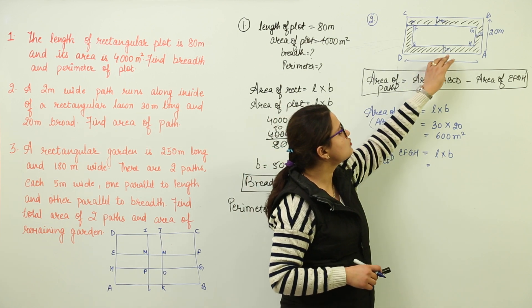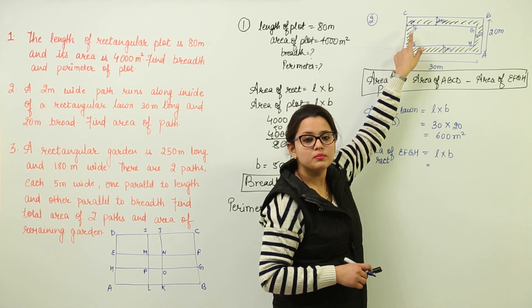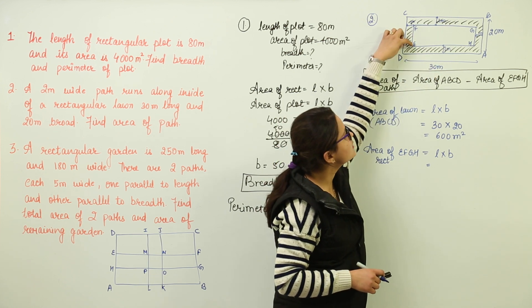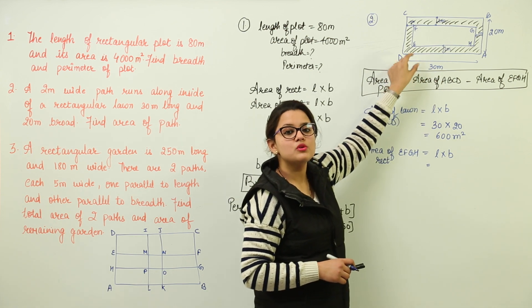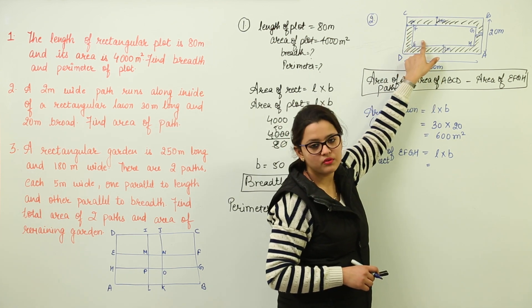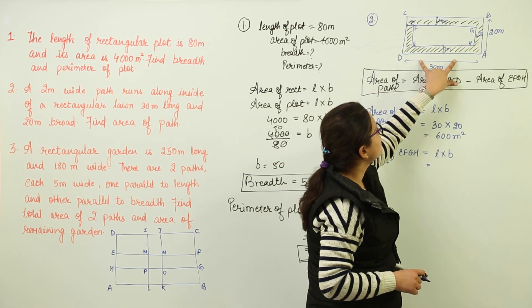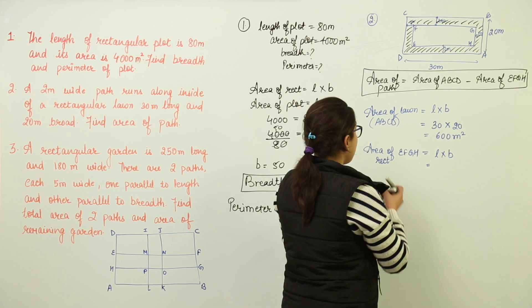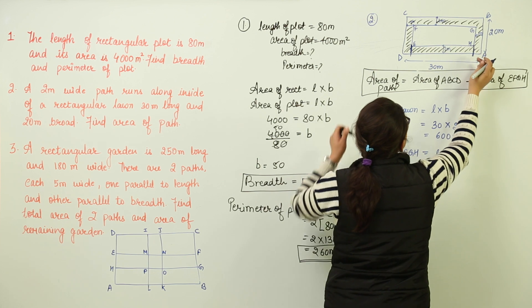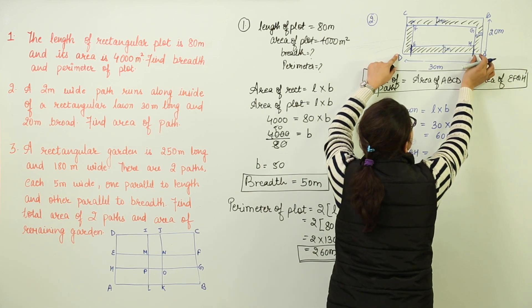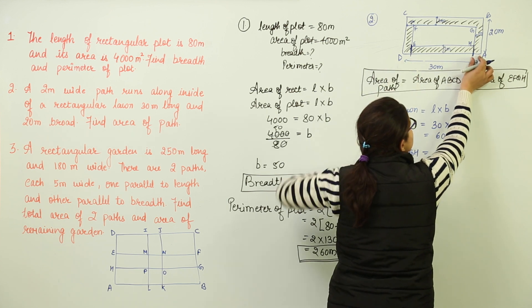But we are given the very important part that is the width of the path. The width of the path here is given as 2 meters. That means this is 2 meters wide in each case. Now that can be used to find out the length and breadth for this one. How do we use that? The total is how much? 30. You need to find out only from here up till here. So that means out of the total length, you will have to subtract this and this. You will be remaining with this much.